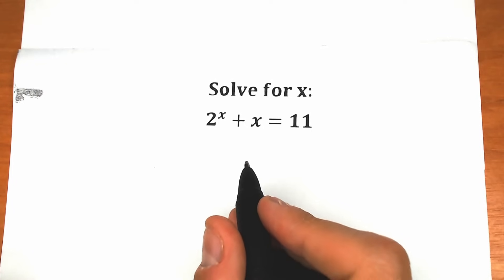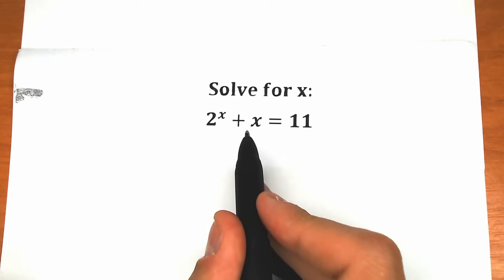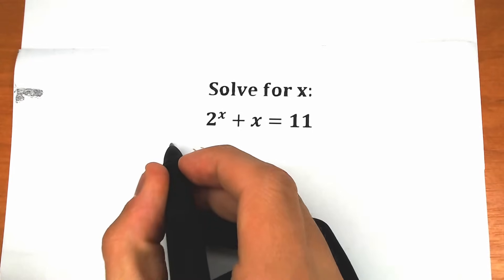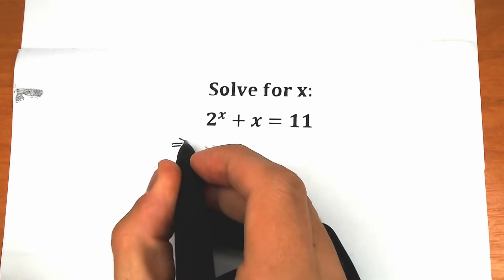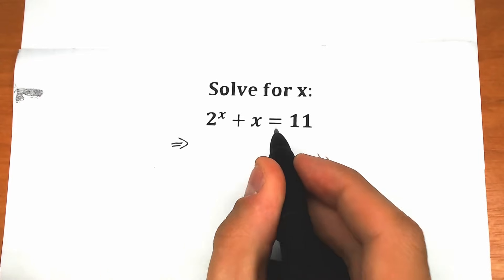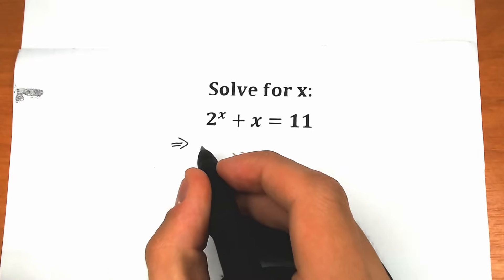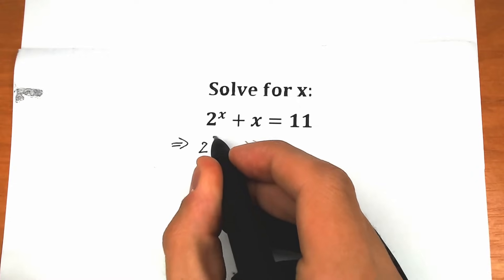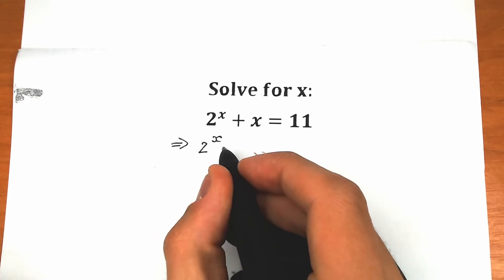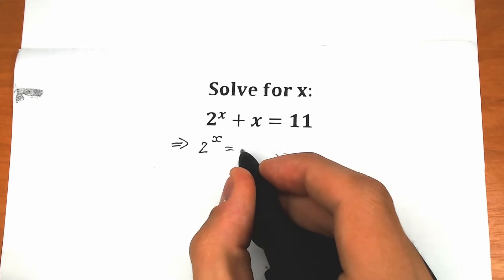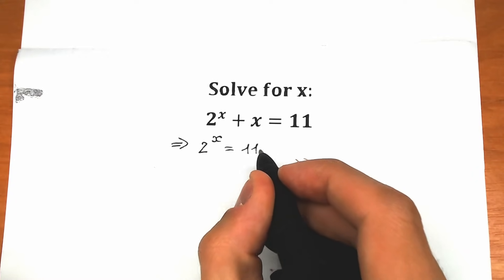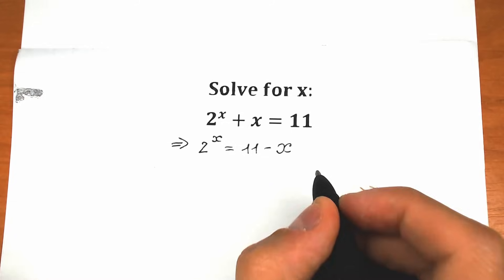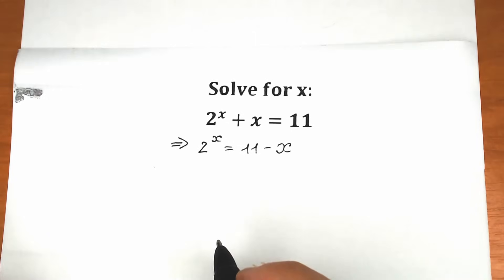First of all, let's bring this x from the left side to the right side. So we're bringing this x from the left side to the right side. As a result we have 2 to the power x equal to 11 minus x. This is our first step.